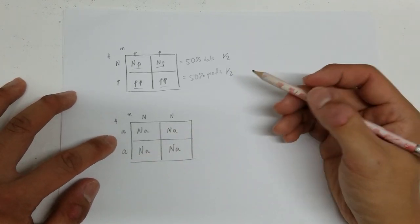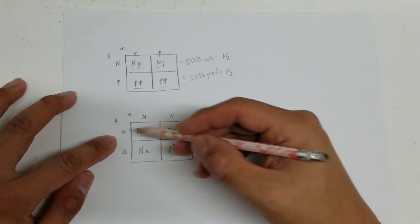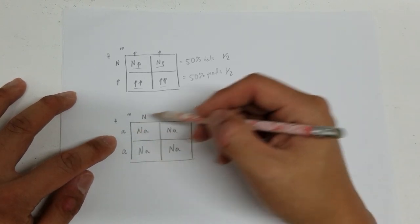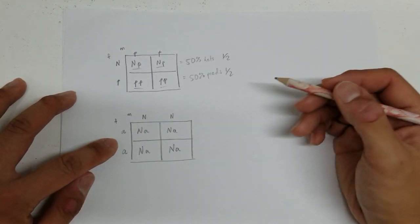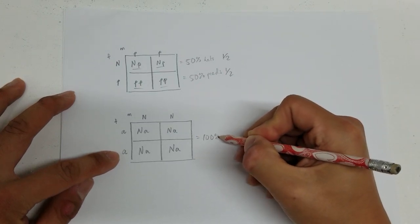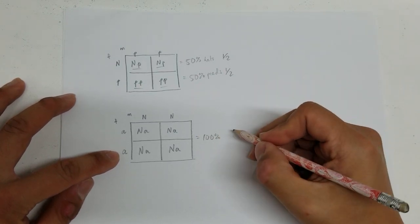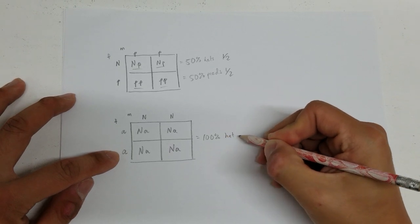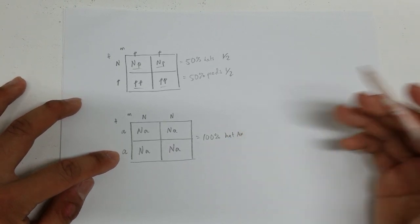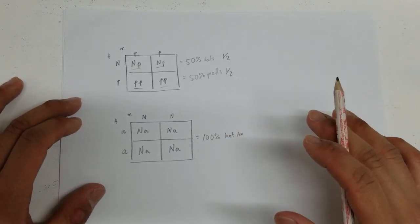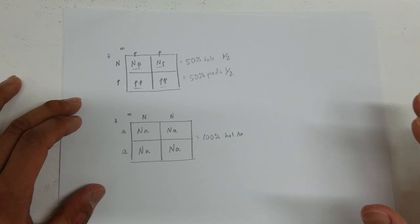So in this pairing, we know that out of the entire clutch, these four quadrants represent the entire clutch, 100% chance of getting het for xanthic. So no matter what, even though the babies will not visually look xanthic, they are all going to be het for xanthic.